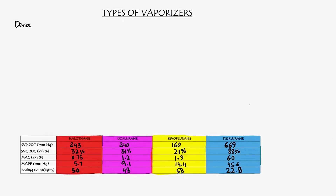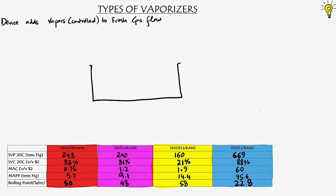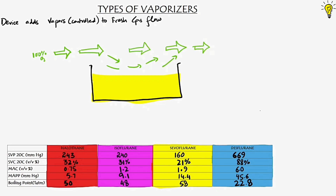So what are these vaporizers in an anesthesia machine? It is a device that adds a precise concentration of inhalational vapor into the fresh gas flow coming from the flow meters. This process can be accomplished in three ways. Number one: the flow-over system — oxygen flows over the vapor liquid chamber on its way towards the patient circuit.